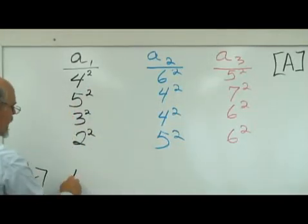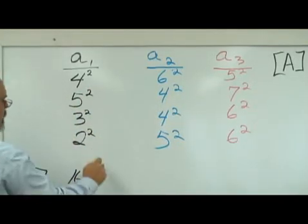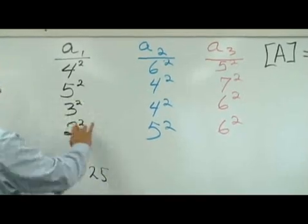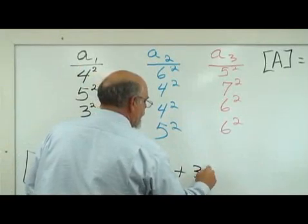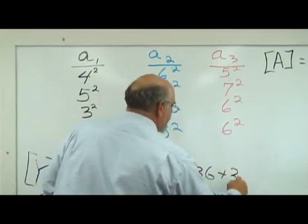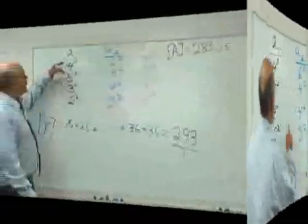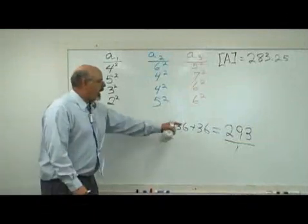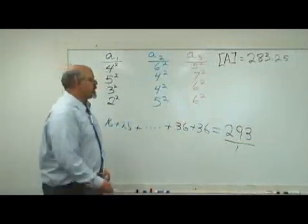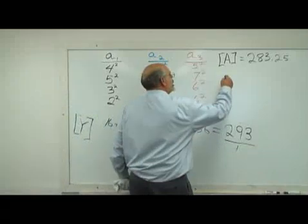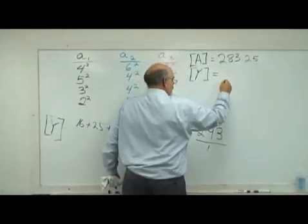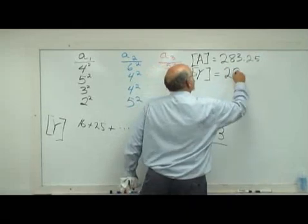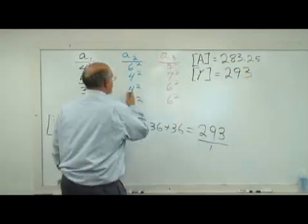So here it's going to be 16, plus here it's 25, all the way over here is going to be 36. Last one is going to be 36. Square them, add them all up, divide by 1. It doesn't change the value. So the Y-bracket term is 293 from this data.